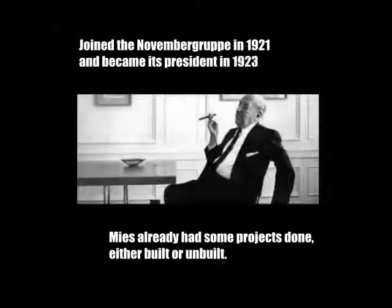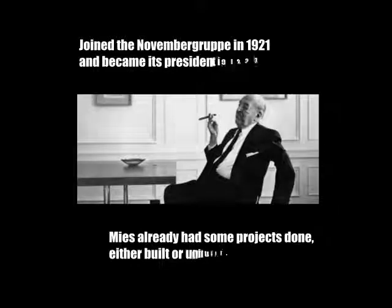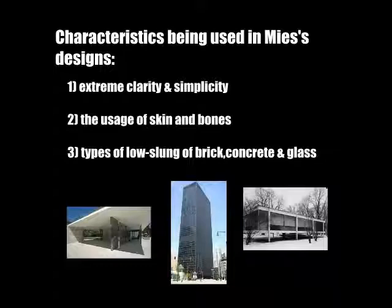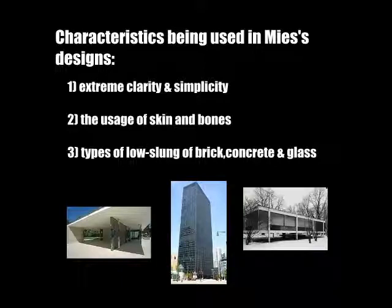He joined the November Group in 1921 and became its president in 1923. During that time, Mies already had some projects done. The common characteristics used in Mies' designs include extreme quality and simplicity, the usage of skin and bones architecture style, and types of low-slung houses of brick, concrete and glass.